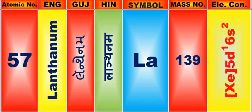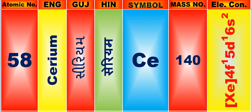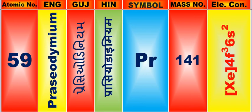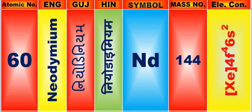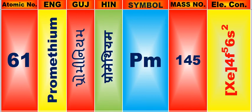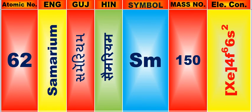Atomic number is 57, name of atom is Lanthanum. Atomic number is 58, name of atom is Cerium. Atomic number is 59, name of atom is Praseodymium. Atomic number is 60, name of atom is Neodymium. Atomic number is 61, name of atom is Promethium. Atomic number is 62, name of atom is Samarium.